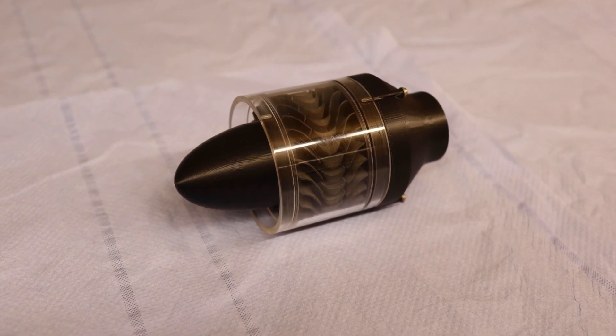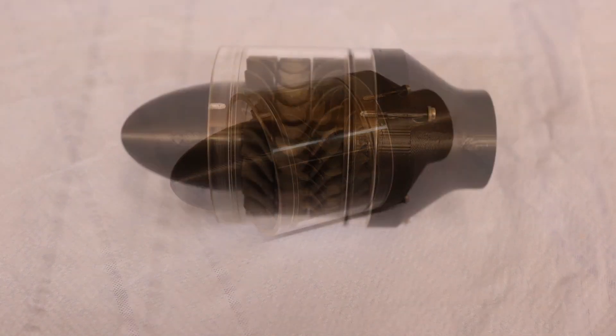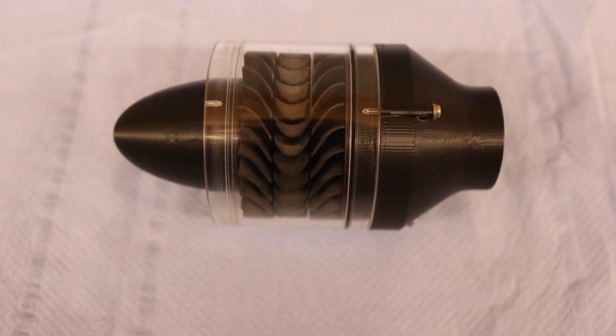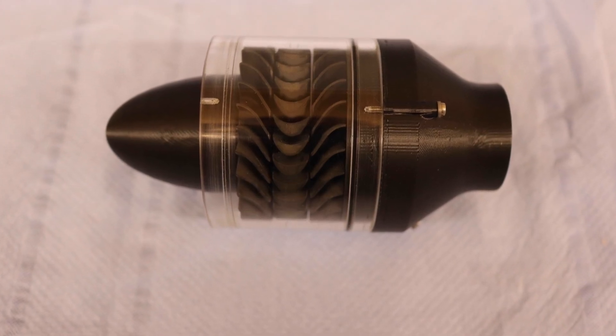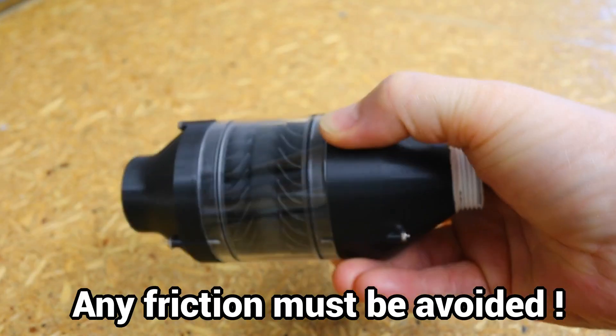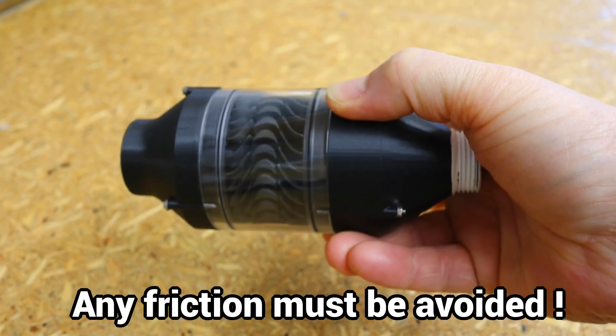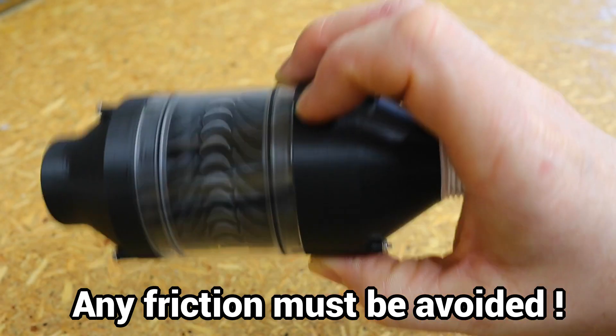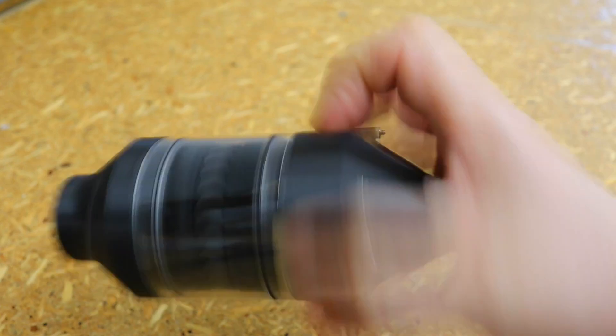The rear casing cover also has a pipe thread to allow universal mounting at a later date. When fitting the parts, it is important to ensure that the dimensions are accurate so that the rotor runs as smoothly as possible with as small gaps as possible.